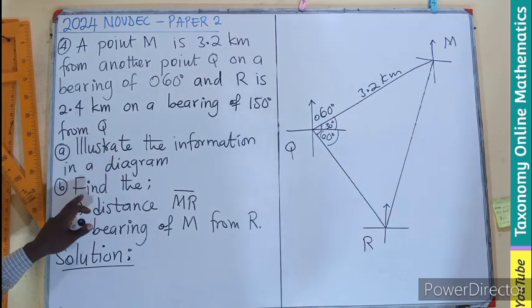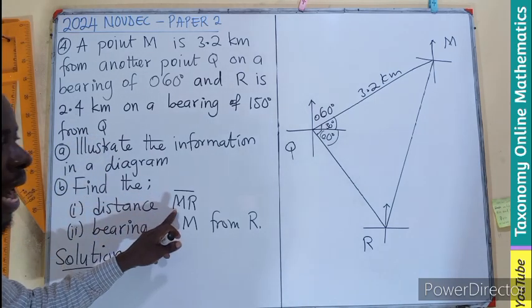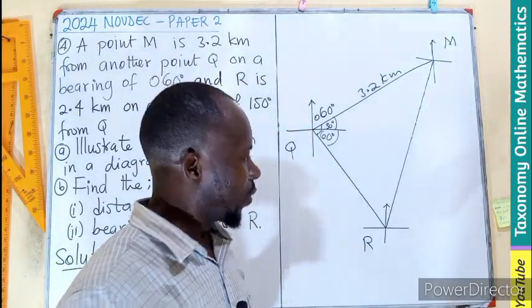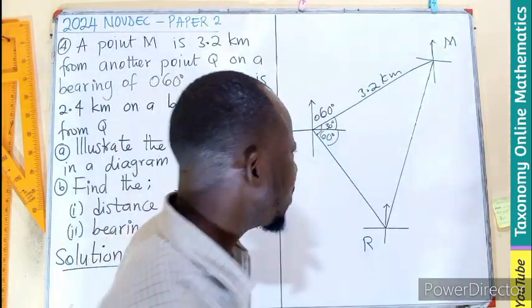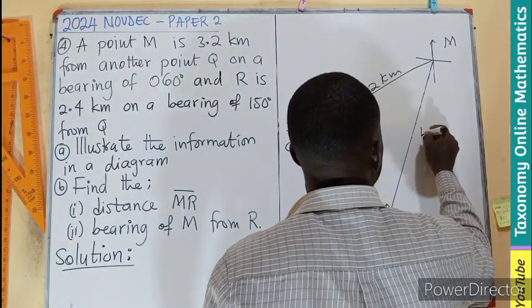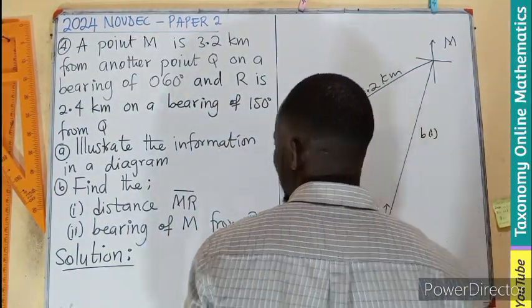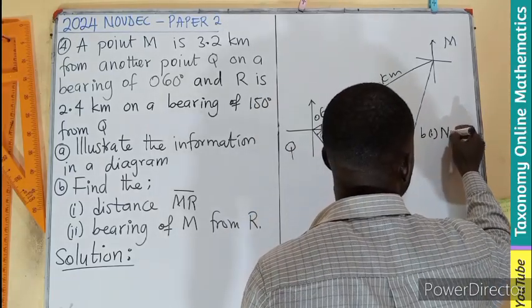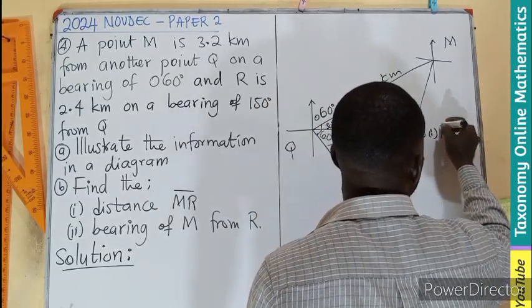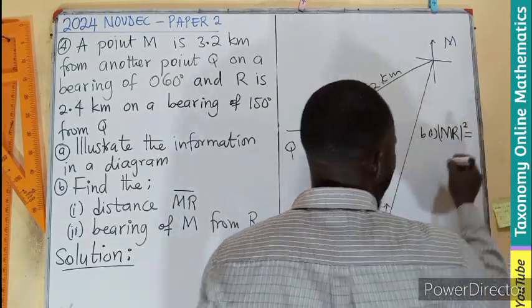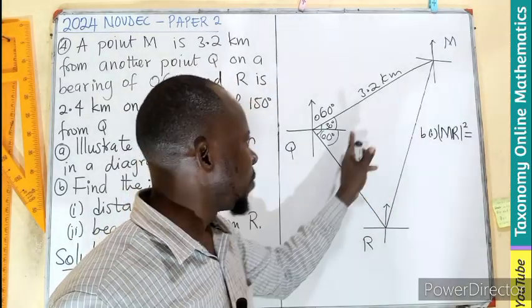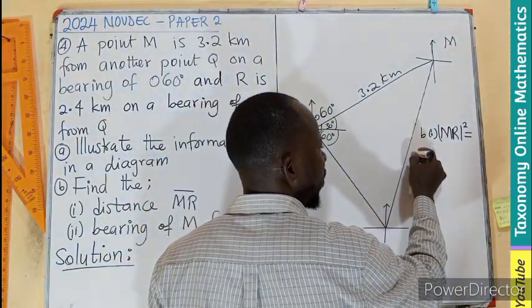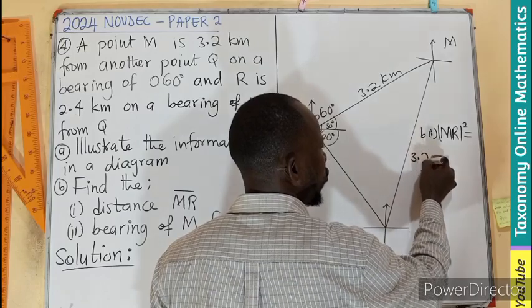Let's come back to the question. We are to illustrate, and this is our illustration. Find the distance MR. The distance MR is going to be the hypotenuse here because 90 degrees is facing here.